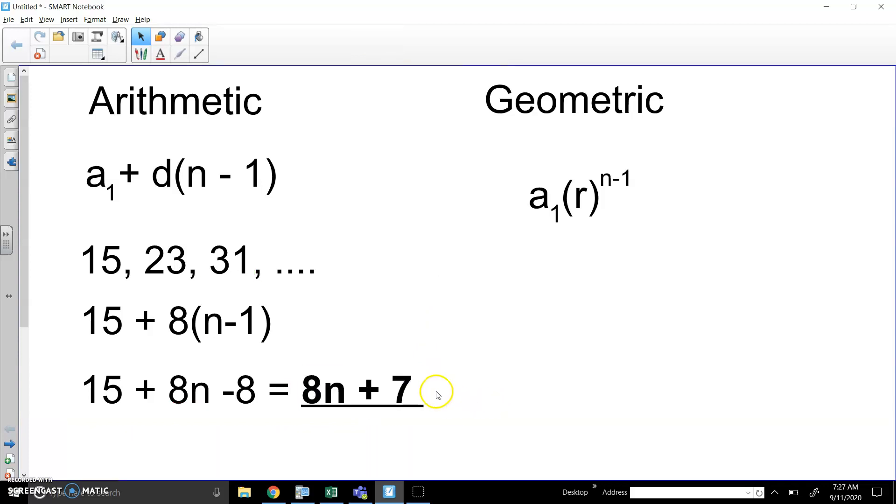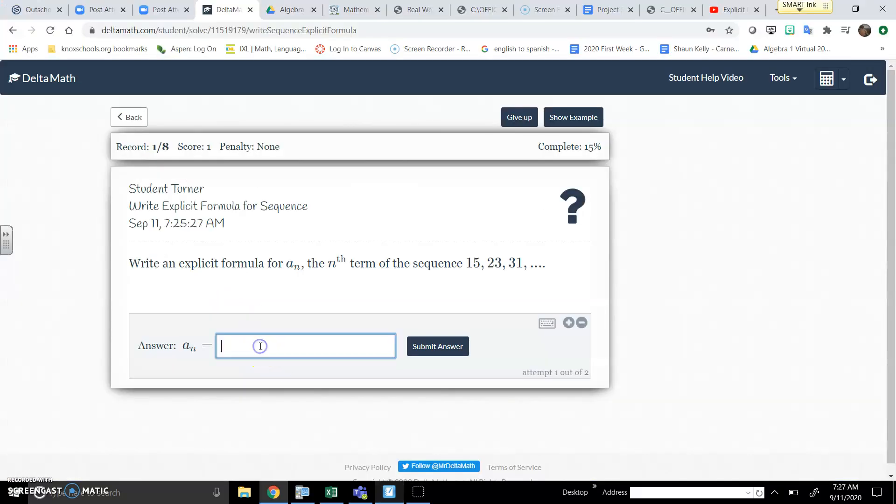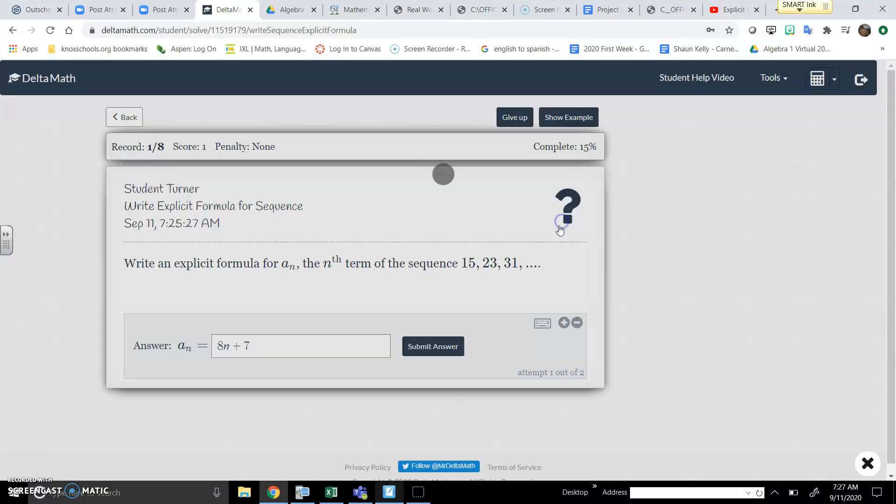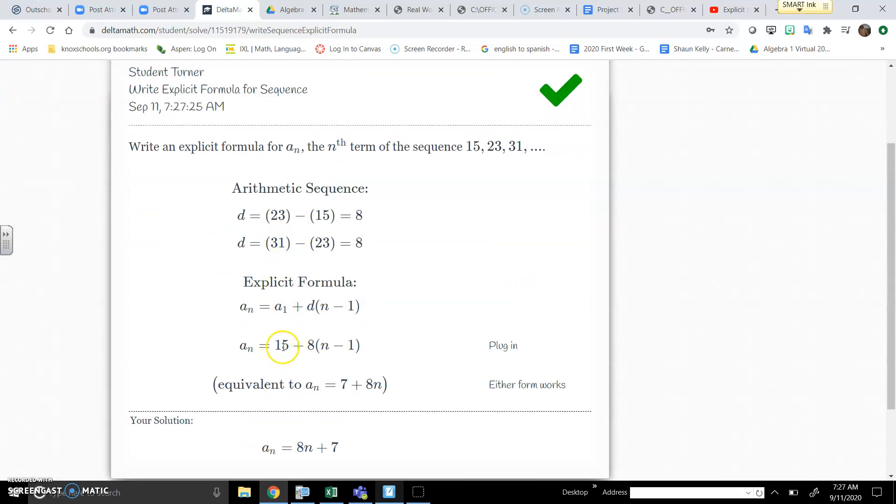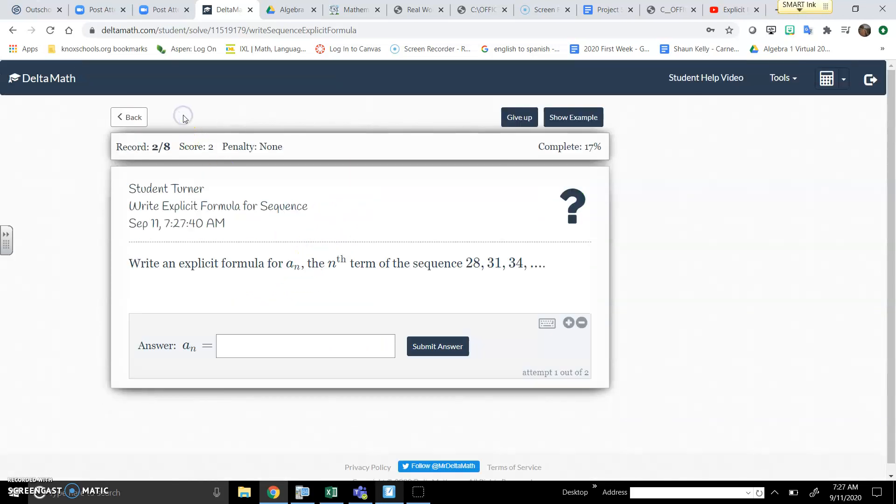This is our formula, so that if you plug in 1, 8 times 1 is 8, plus 7, you get 15. Or 8 times 2 plus 7, 23. 8 times 3 plus 7 is 31. So I'm going to put in 8N plus 7. It does. So again, A1 represents the first number in the sequence. The D stands for common difference. That's the pattern of adding or subtracting in the formula. And then once you clean it up, you will get your final answer.